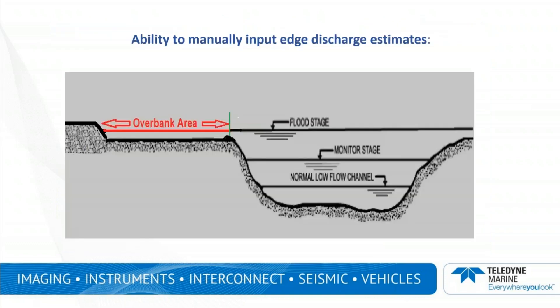Under flood stage conditions, a channel may overflow its banks. In this diagram, the main channel is shown to the right of the vertical green line and the overbank to the left of the vertical green line. It can be the case that the instrumentation used for the measurement of the main channel may not be suitable for the overbank area.